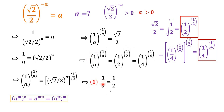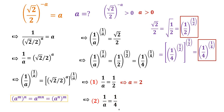The first case: 1 over a is equal to 1 over 2, so a is equal to 2. The second case: 1 over a is equal to 1 over 4, so a is equal to 4. So we have two positive roots of this equation.